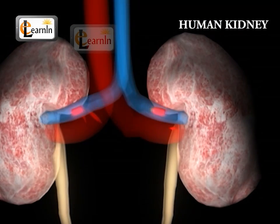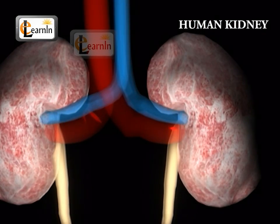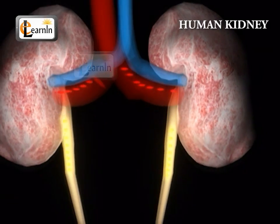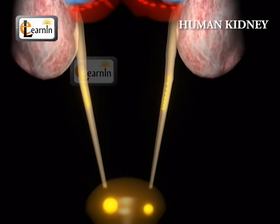Through the calyces, urine reaches funnel-like ducts and from there goes into the pelvis. From the pelvis, urine goes to the ureters.